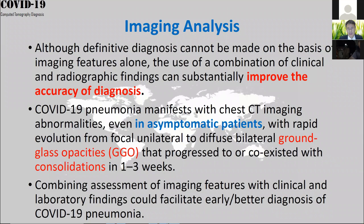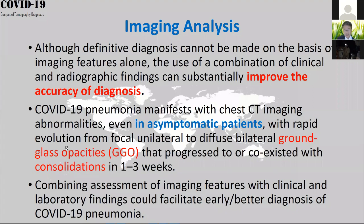Imaging can reveal more details about the disease. For example, in asymptomatic patients, COVID-19 pneumonia can show some lesions — ground glass opacity can progress to consolidation in a couple of weeks. This information can be reviewed through CT images. Combining imaging features with clinical and laboratory findings helps with early and better diagnosis of COVID-19 pneumonia.